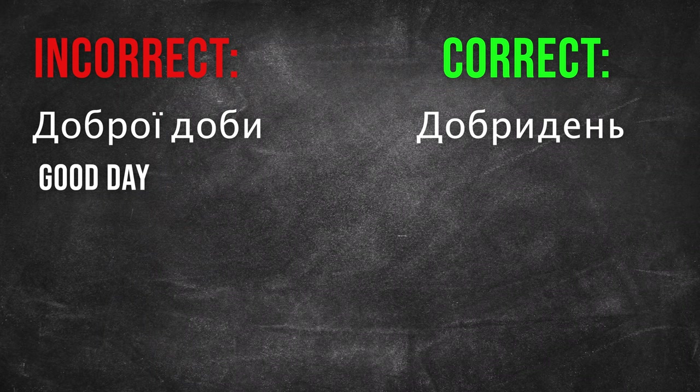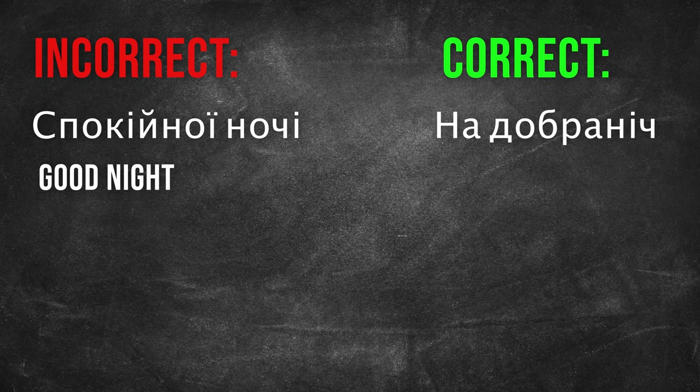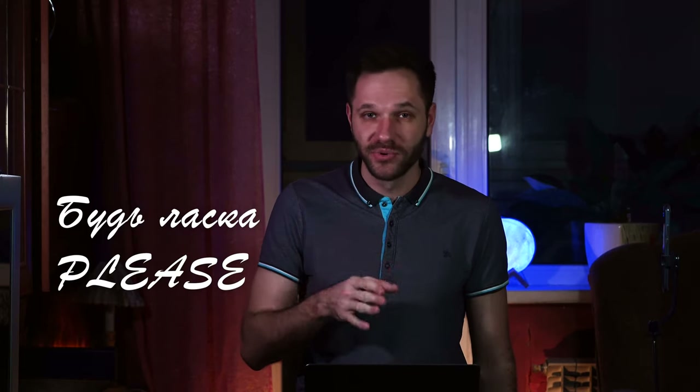Common mistakes in Ukrainian connected with greetings and goodbyes. Not all Ukrainians know how to greet and say goodbye grammatically correctly. Remember these: «Доброї доби», «Добридень», «Доброго дня», «Добрий день», «Спокійної ночі», «На добраніч». Also, «Будь ласка» — please — is written in Ukrainian separately and without a hyphen. Practice today to pronounce and write it properly: «Будь ласка».